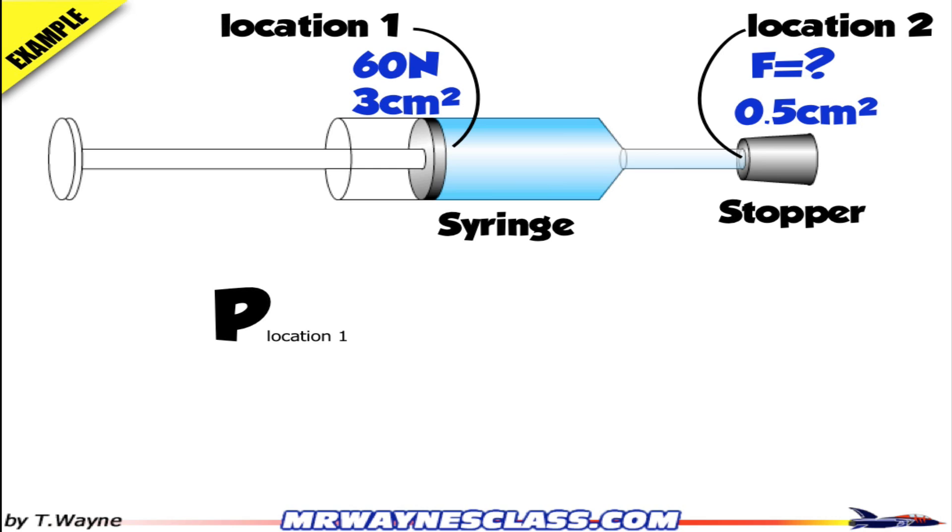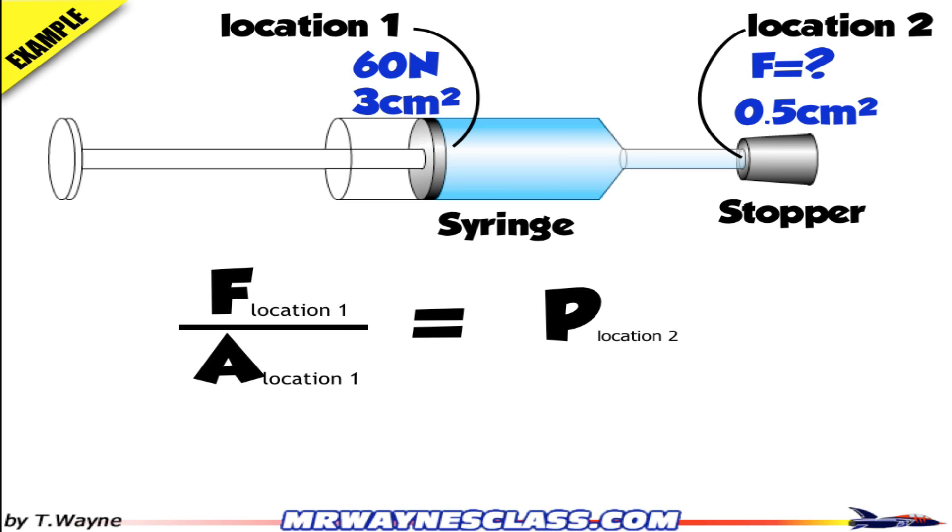When I apply pressure at location 1, that's the same pressure at location 2. But I don't have the pressure at location 1 - I have force and area. Force over area is pressure, so I'll look at it as force at location 1 divided by the area of location 1.